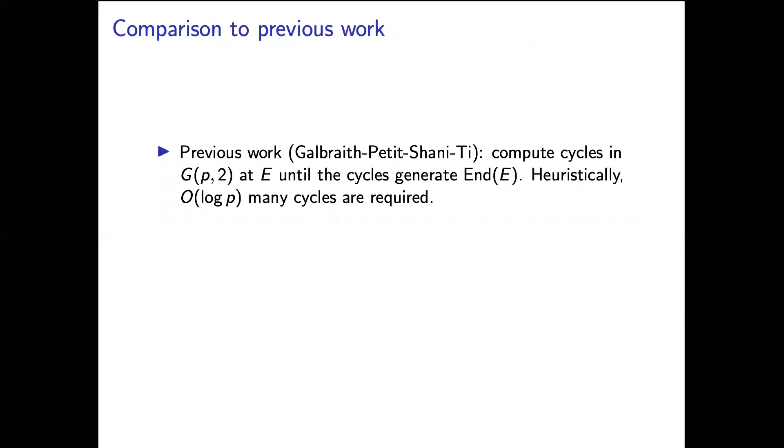So a previous work for computing the endomorphism ring, Galbraith, Petit, Shani, and Ti give an algorithm for computing the endomorphism ring or at least sketch it. And they suggest that you can compute cycles in the 2-isogeny graph say until you have enough cycles to generate the full endomorphism ring. And heuristically one is going to need about log p many such cycles.